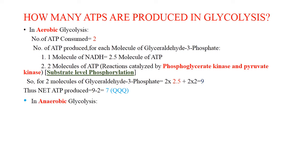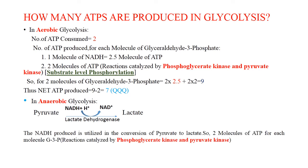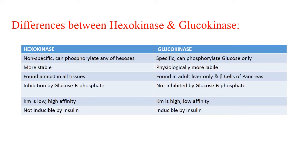In anaerobic glycolysis, pyruvate is converted to lactate by lactate dehydrogenase. The NADH produced in the glyceraldehyde-3-phosphate reaction is reutilized in this step. Therefore, the net ATP produced is only 2 molecules — from the substrate-level phosphorylation reactions — per glucose in anaerobic glycolysis.